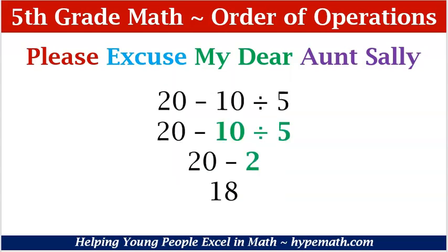Let's look at another example. We have 20 minus 10 divided by 5. We see that we have a subtraction operation and also a division. Based on PEMDAS, we are going to divide first. So our focus is on 10 divided by 5, which is 2. Now we have 20 minus 2 and that is equal to 18. So 20 minus 10 divided by 5 is equal to 18.